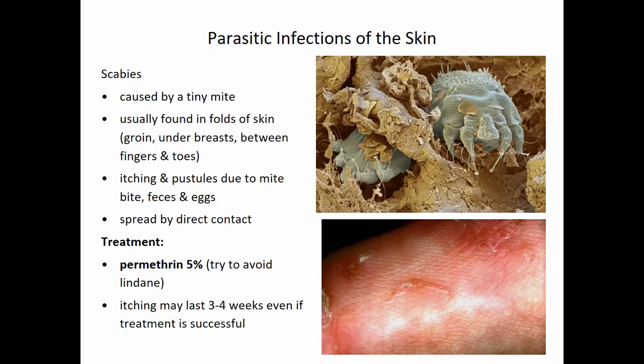Scabies are spread by direct contact from one person to another. Treatment is a medication called permethrin — a body shampoo applied all over the body, left on for a period of time, then washed off. That should get rid of the mites, although itching may last another three to four weeks even after successful treatment.